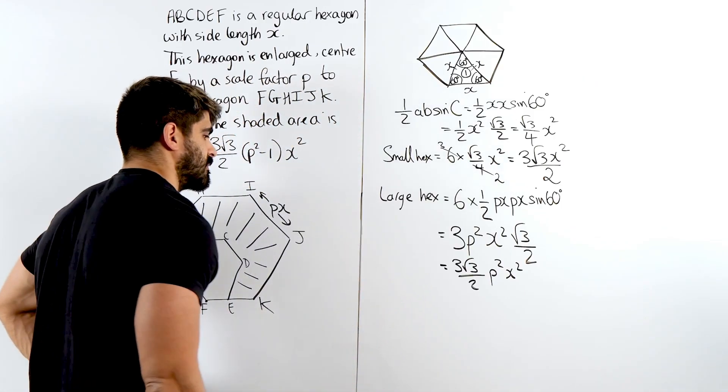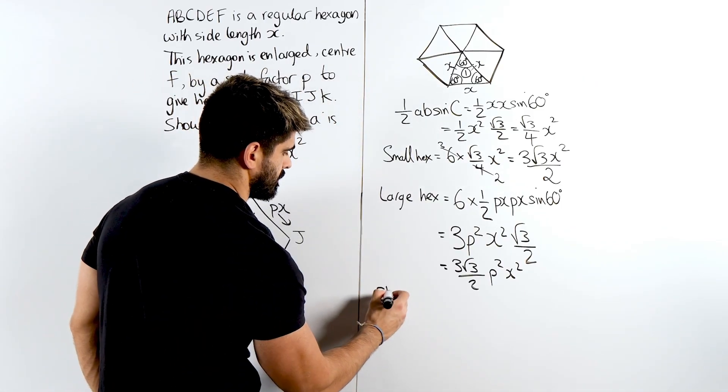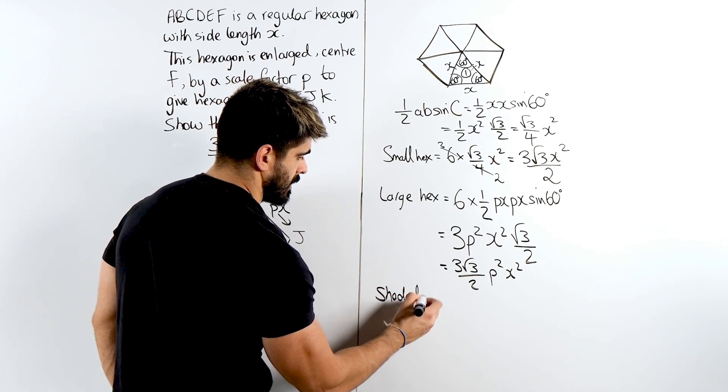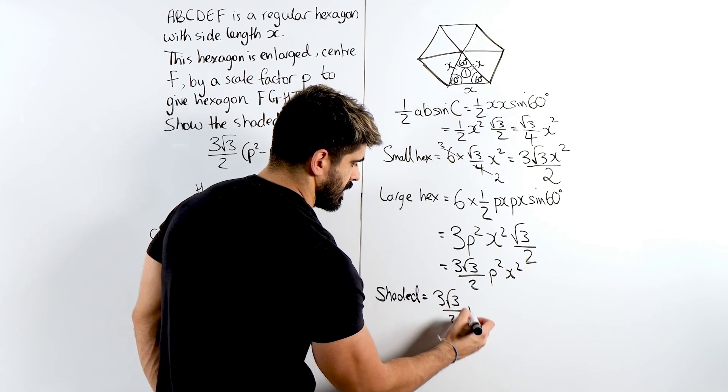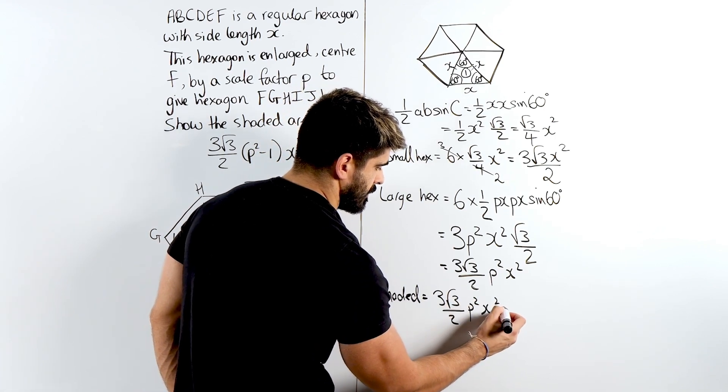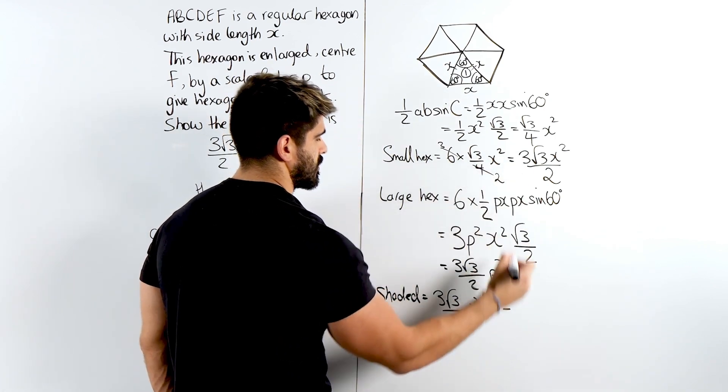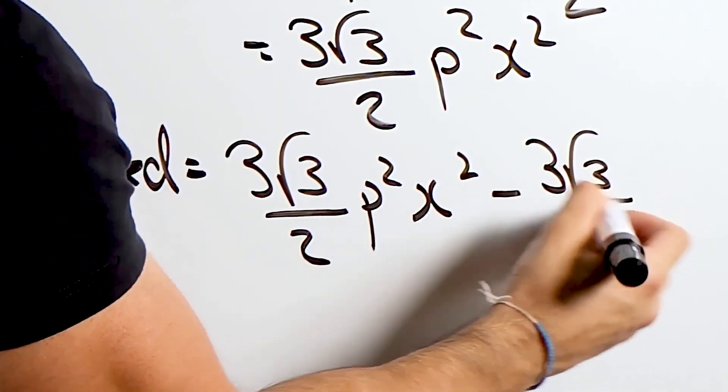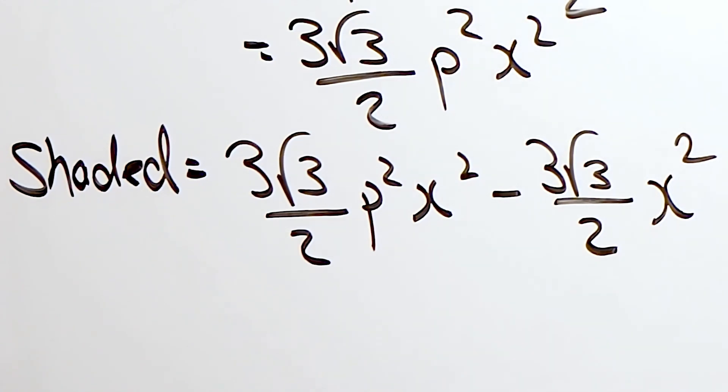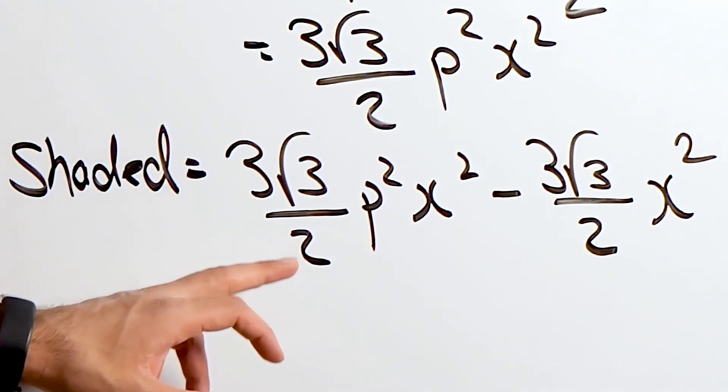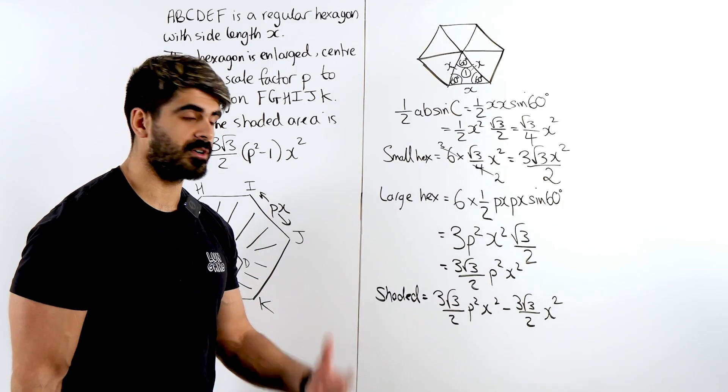Now we do the subtraction. So the shaded is this area, which is 3 root 3 over 2 P squared X squared, minus this, 3 root 3 over 2 X squared. The last thing we need to do is we need to factorize. That's what they've done. To be honest, guys, if you go from this straight to this, you'd get full marks. But let's just understand what we're doing.